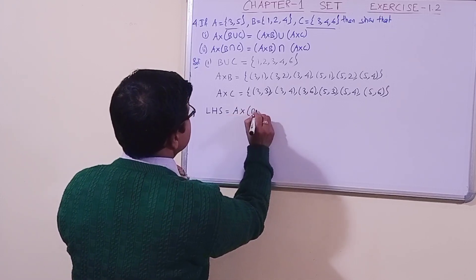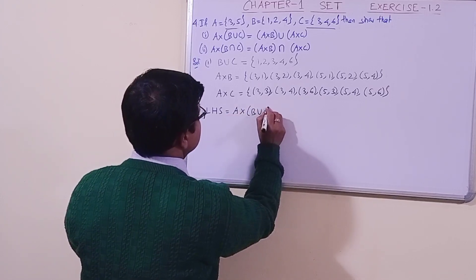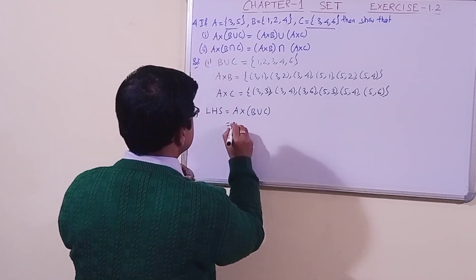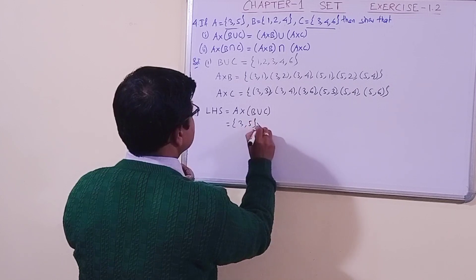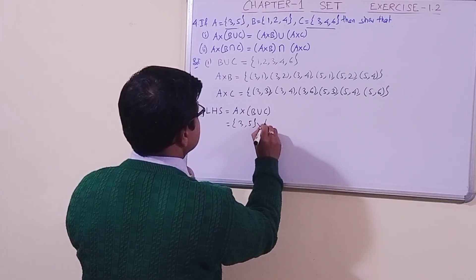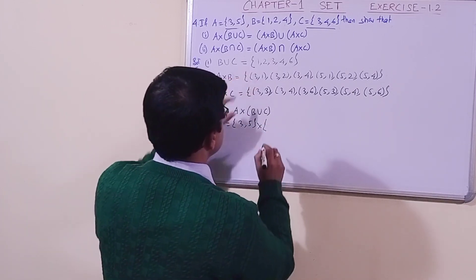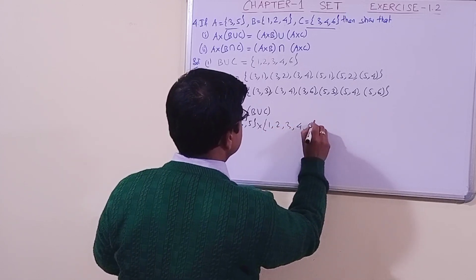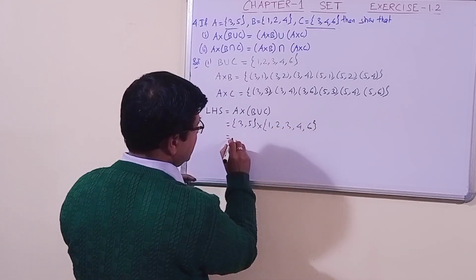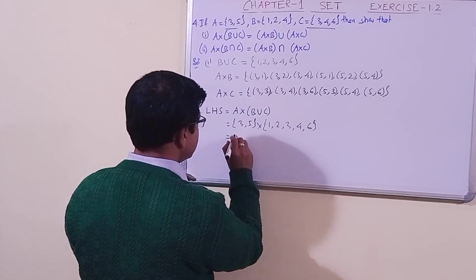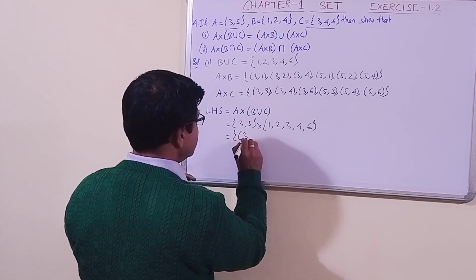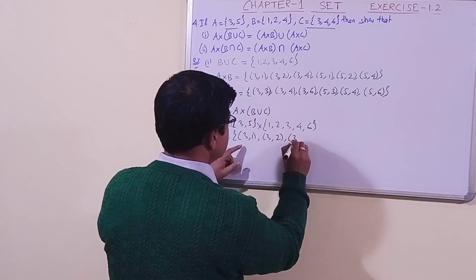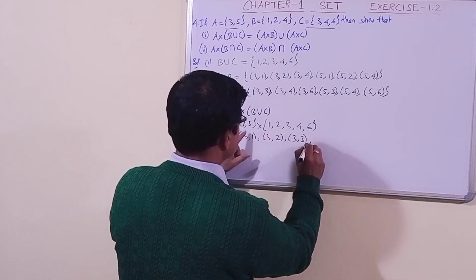The left-hand side is A cross (B union C). Set A is {3, 5} and B union C is {1, 2, 3, 4, 6}. Let us do the Cartesian product. We get: (3,1), (3,2), (3,3), (3,4).